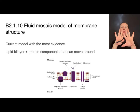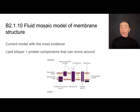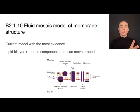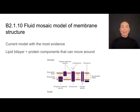We'll end by discussing the fluid mosaic model of the membrane — something you should know how to draw. Mosaic means it's made up of many parts; fluid means those parts can move around. So if a protein isn't needed in one location, it can move to another part of the membrane. This is the current model of the cell membrane with the most evidence to support it. Key components to remember: the lipid bilayer of phospholipids and the various protein components that can move around — make sure you can draw this.